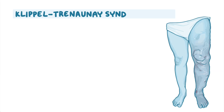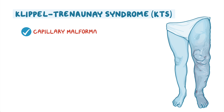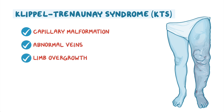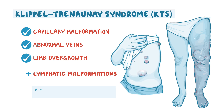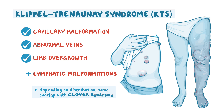Klippel-Trenaunay syndrome includes capillary malformation, abnormal veins, and limb overgrowth. People with KTS often have lymphatic malformations as well, so depending on the distribution, may have some overlap with CLOVES syndrome.